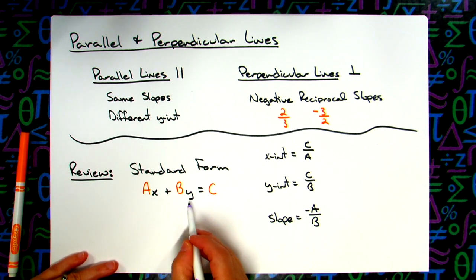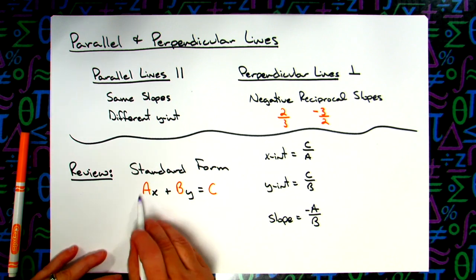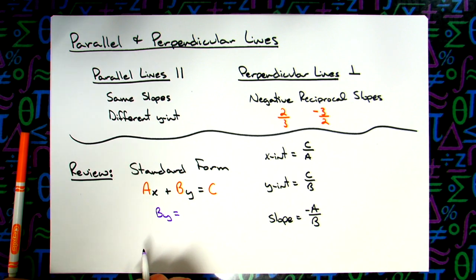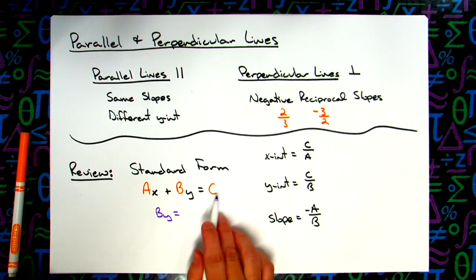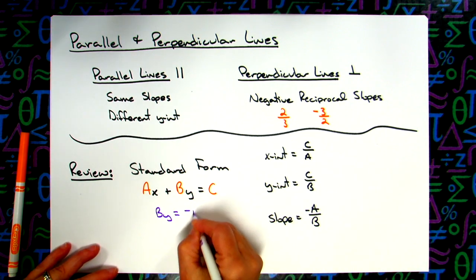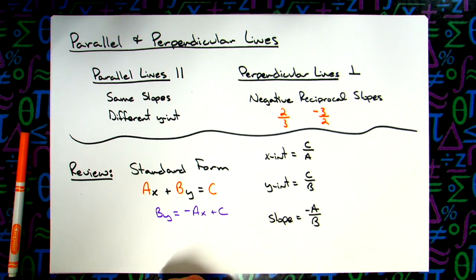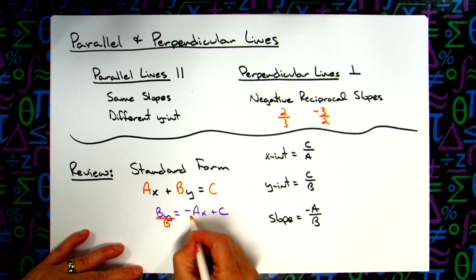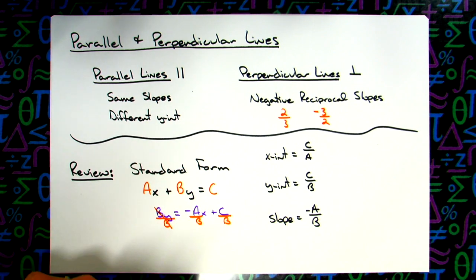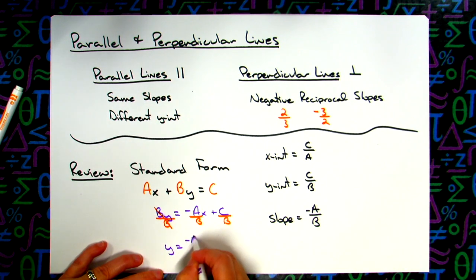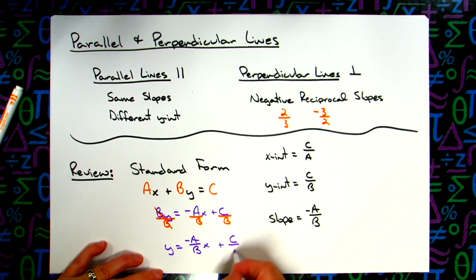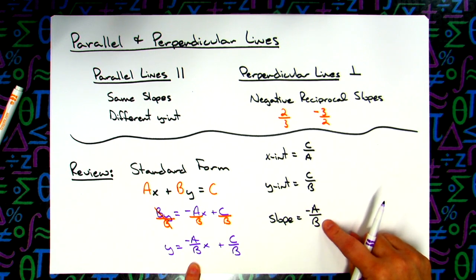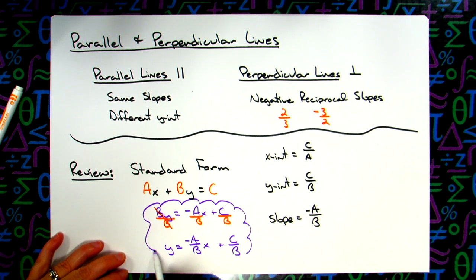If I take the standard form equation and solve for y to get slope-intercept form: I subtract ax from both sides to get By equals negative ax plus c. Then dividing the entire equation by b — divide by b on each term — the b's cancel, leaving y equals negative a over b times x plus c over b. So the y-intercept is c over b and the slope is negative a over b — you can algebraically show exactly where those formulas come from.